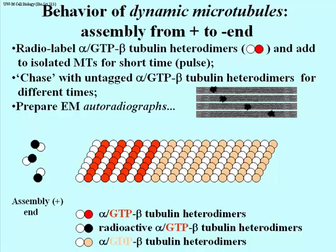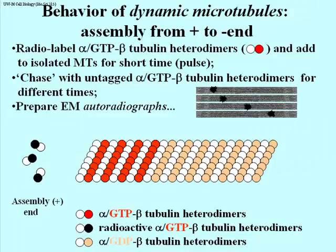To the sedimented microtubule pellet, you add fresh solution containing non-radioactive alpha-beta heterodimers. During the time that the non-radioactive heterodimers are present — that's called the chase — the microtubule will continue to grow, but now adding non-radioactive heterodimers. If you sample some of the microtubules at different times of the chase, you can make autoradiographs and would see a set of autoradiographs like those represented here.